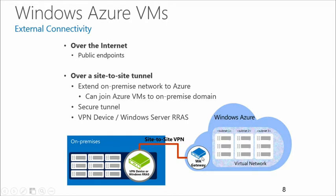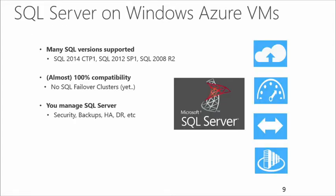The way this works is you configure a VPN device, like a Cisco router, or Windows remote access services in Windows Server, to establish a software-based site-to-site tunnel between your on-premise environment and Windows Azure. On the Windows Azure side, there is a gateway that establishes the secure connection. We support SQL Server versions since SQL Server 2008 R2, SQL 2012, and now SQL Server 2014 CTP1 and recently CTP2. We have almost 100% compatibility — the only thing currently being worked on is SQL Server failover clusters. Everything else in the programmability surface is supported: integration services, reporting services, analysis services, spatial data.